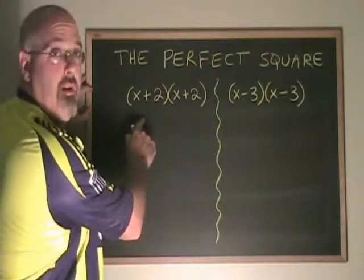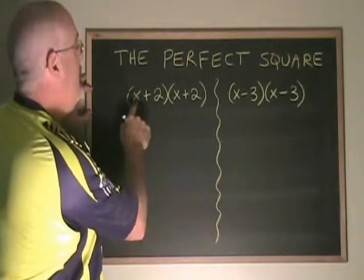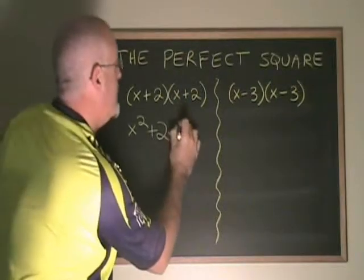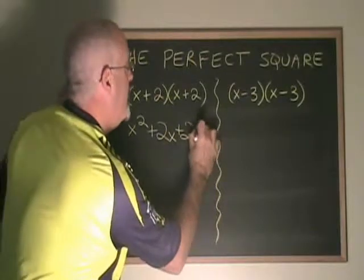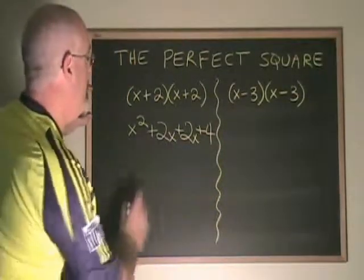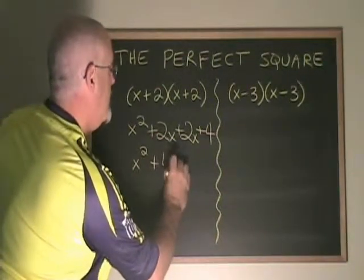Using the FOIL, x times x is x squared. x times 2 is 2x, 2 times x is another 2x, and 2 times 2 is 4. Simplifying, the two middle terms combine and we have x squared plus 4x plus 4.